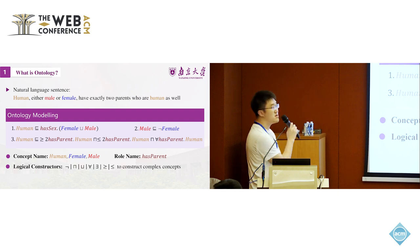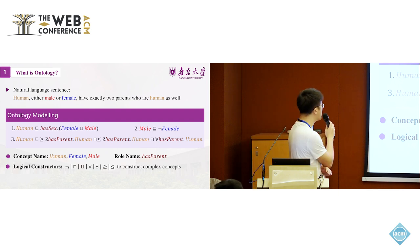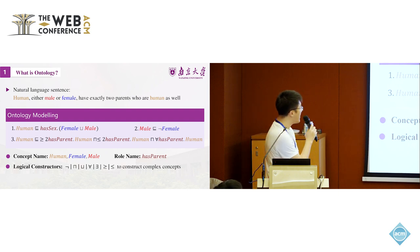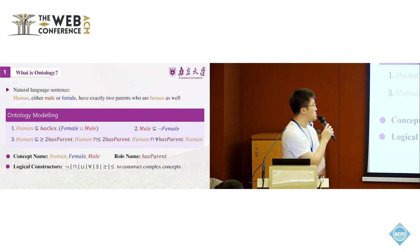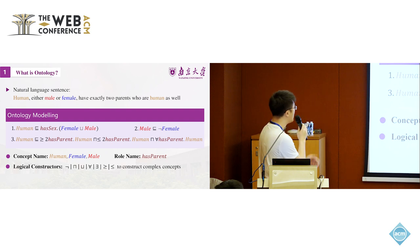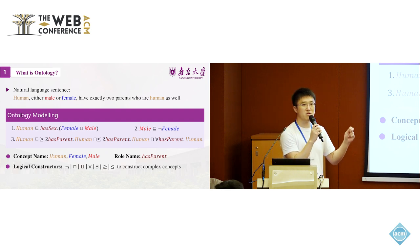What is ontology? Given a natural language sentence, human is a male or female, have exactly two parents who are human as well. To model this sentence in ontology, we can use some logical-based representation to do the same thing.